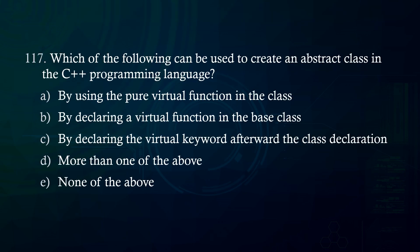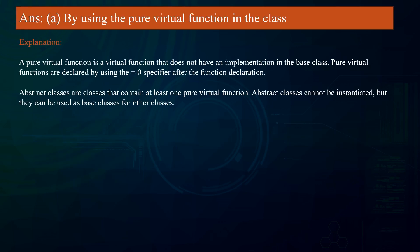Which of the following can be used to create an abstract class in C++? A. By using the pure virtual function in the class. B. By declaring a virtual function in the base class. C. By declaring the virtual keyword after the class declaration. Answer: By using the pure virtual function in the class. A pure virtual function has no implementation in the base class and is declared using '= 0'. Abstract classes contain at least one pure virtual function, cannot be instantiated, but can serve as base classes.